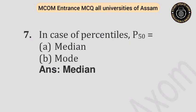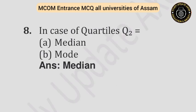Question number seven: In case of percentiles, P50 equals — Option A: Median. Option B: Mode. Answer is median. Question number eight: In case of quartiles, Q2 equals — Option A: Median. Option B: Mode. Answer is median.